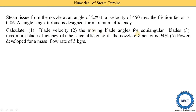Second, we need to find the moving blade angle for equiangular blades. Moving blade angle means the inlet and outlet angle of the blade, that is theta and phi. For equiangular blades, theta and phi are both the same. Third, we need to calculate maximum blade efficiency. Fourth, stage efficiency if the nozzle efficiency is 94% — stage efficiency is the multiplication of nozzle efficiency and blade efficiency. Last, the power developed for a mass flow rate of 5 kg per second.